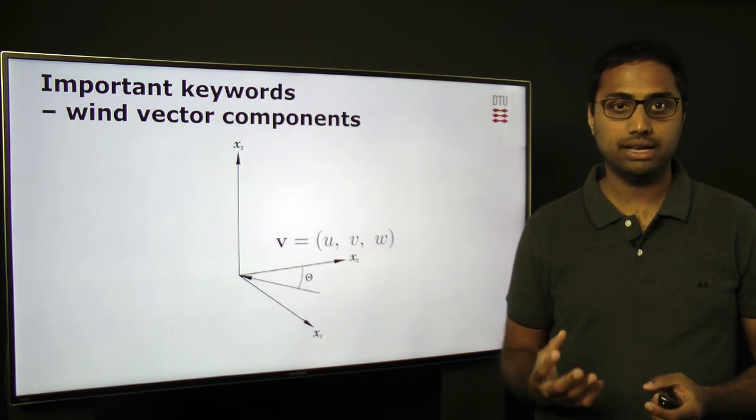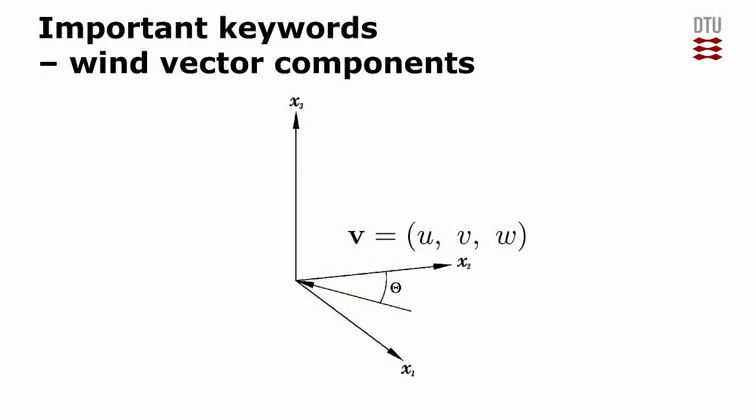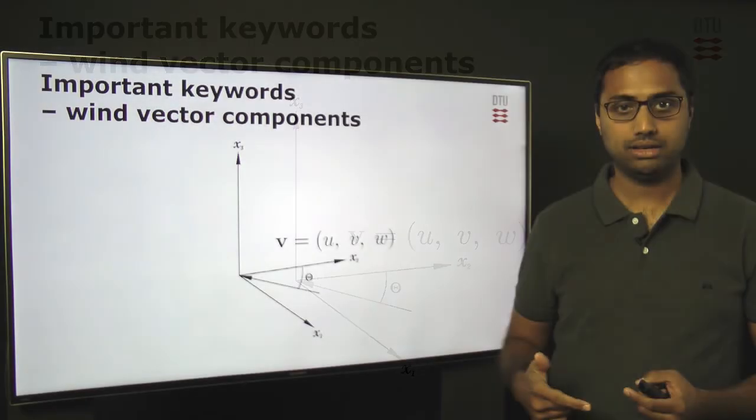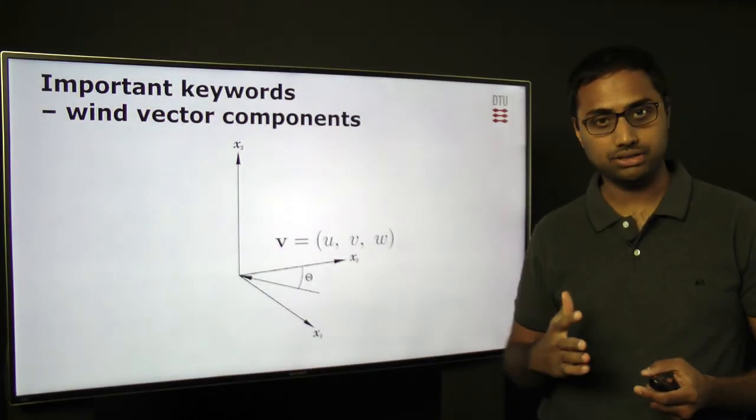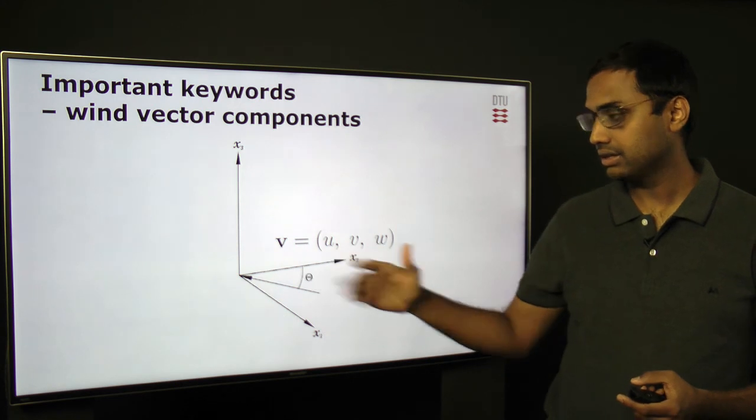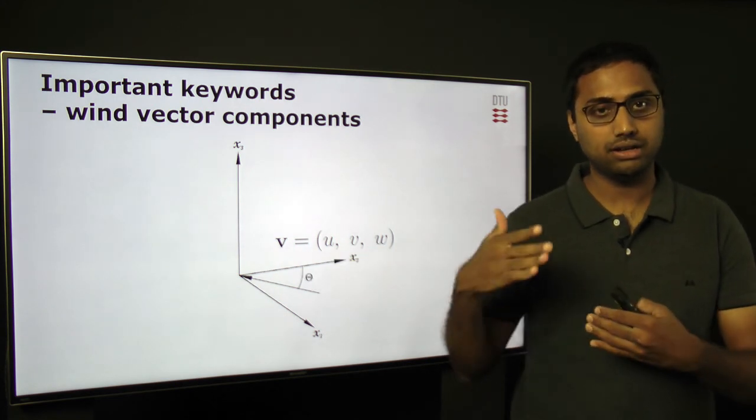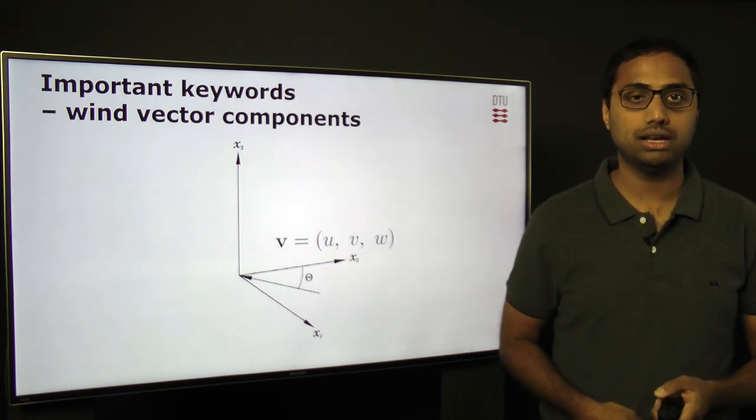Wind vector, as we call it, is composed of three components. Here you can see U, V, and W. Simply, this wind vector has a magnitude and a direction. The direction is measured with respect to a certain reference axis, which we call as the wind direction.